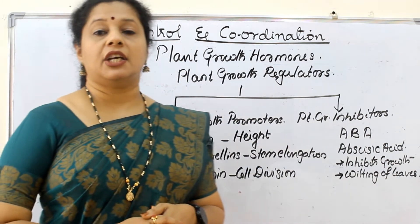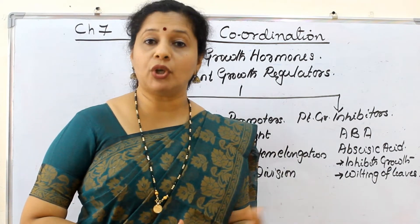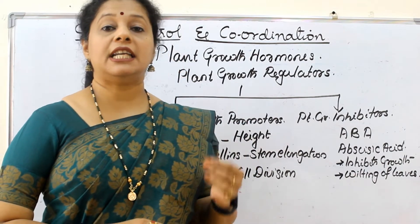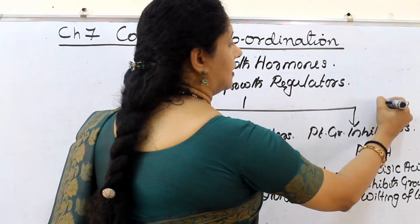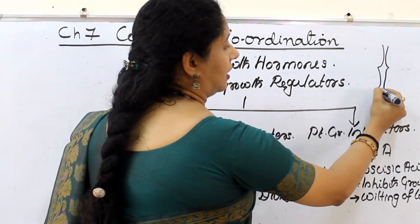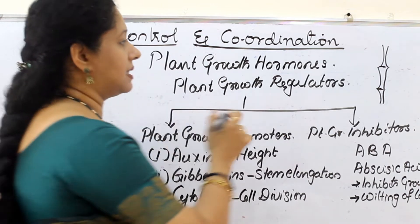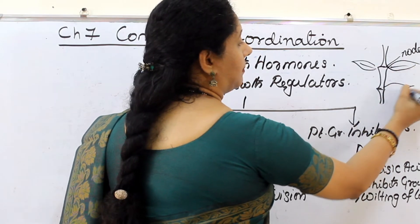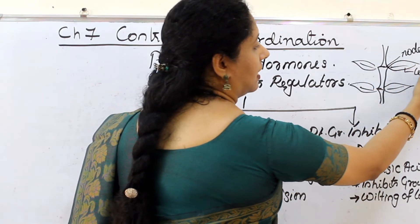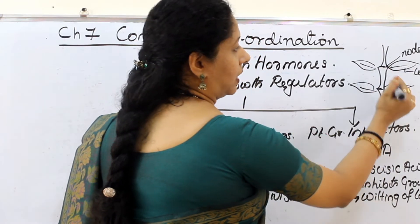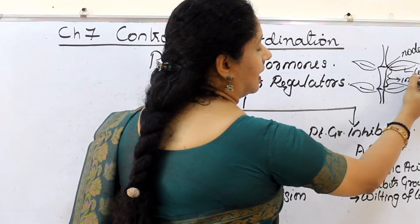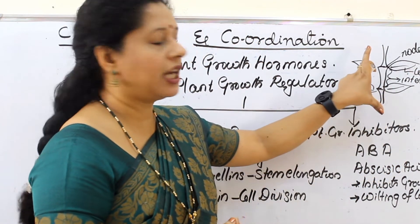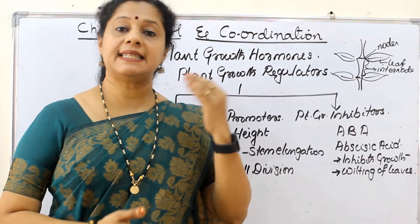The second hormone is called gibberellins. Gibberellins is also a hormone that can promote growth, but it is not at the tips — it is present in the internodal region of the plant. A stem has thick parts called nodes, from which the leaves arise. The part of the stem from where the leaves arise is called the node, and the space between two adjacent nodes is called the internode. Gibberellin helps in the elongation of this internode — basically stem elongation.